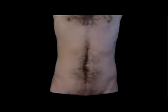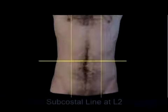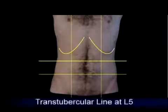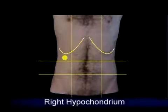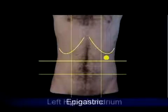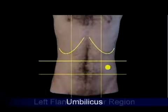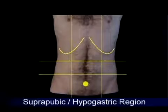The abdomen can also be divided into nine zones demarcated by the left and right midclavicular lines, a horizontal line at the inferior margin of the costal margin — the subcostal line at L2 — and a horizontal line joining the two tubercles of the iliac crest — the transtubercular line at L5. The regions are called the right hypochondrium, epigastric, left hypochondrium, right lumbar, umbilical, left lumbar, right groin, suprapubic, and left groin.